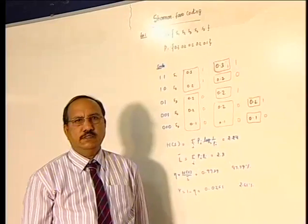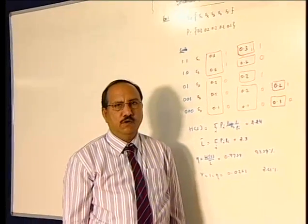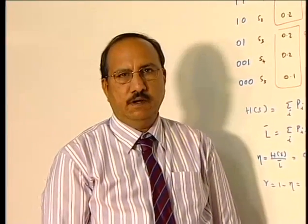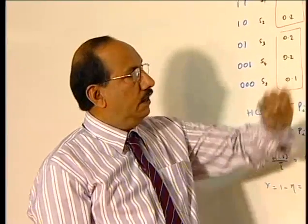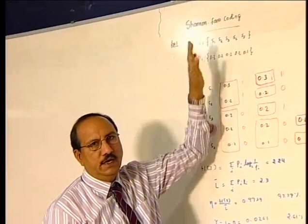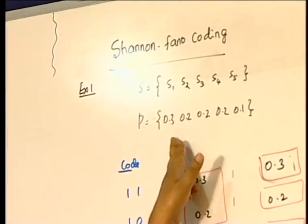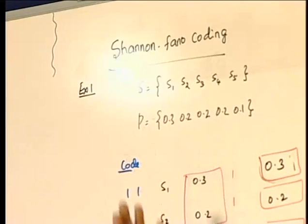Now I will be explaining how to assign a code using Shannon-Fano coding. I will take two examples. In the first example, simple one, I will consider a source with five symbols S1, S2, S3, S4, S5 with the probabilities 0.3, 0.2, 0.2, 0.2, and 0.1.